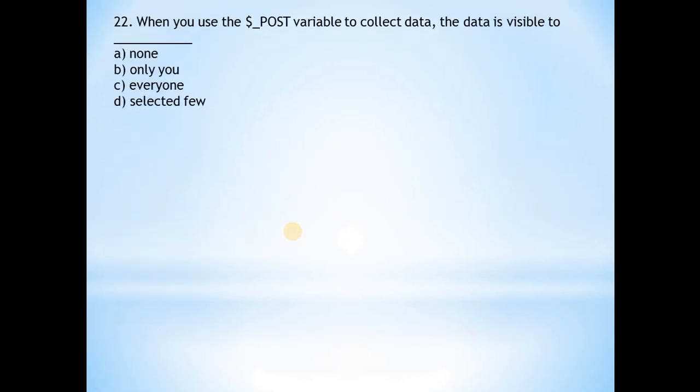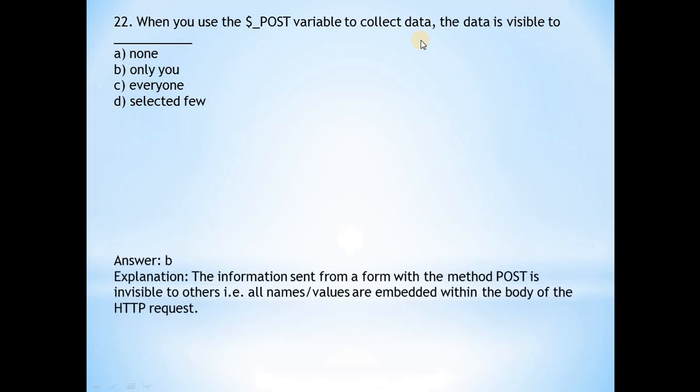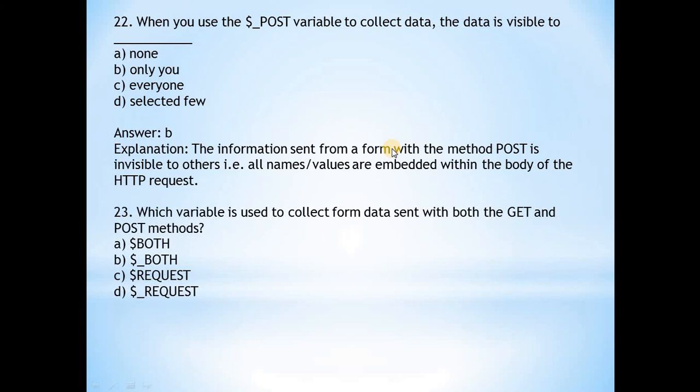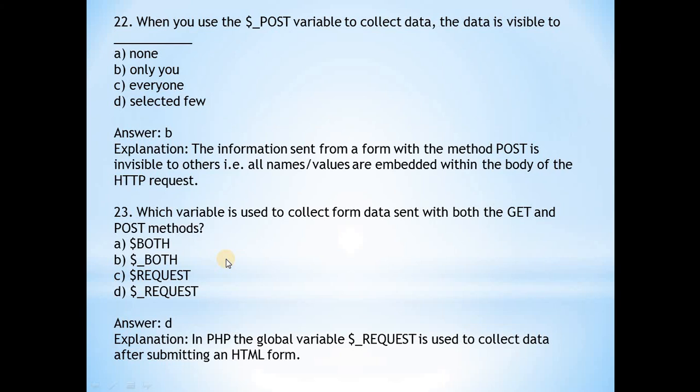Next question: When you use the $_POST variable to collect data, the data is visible to... Answer is b, only you. The information sent from a form with the method POST is invisible to others. All variable names and values are embedded within the body of the HTTP request. Next: Which variable is used to collect form data sent with both the GET and POST methods? Answer is d, $_REQUEST. This superglobal variable collects data after submitting an HTML form.